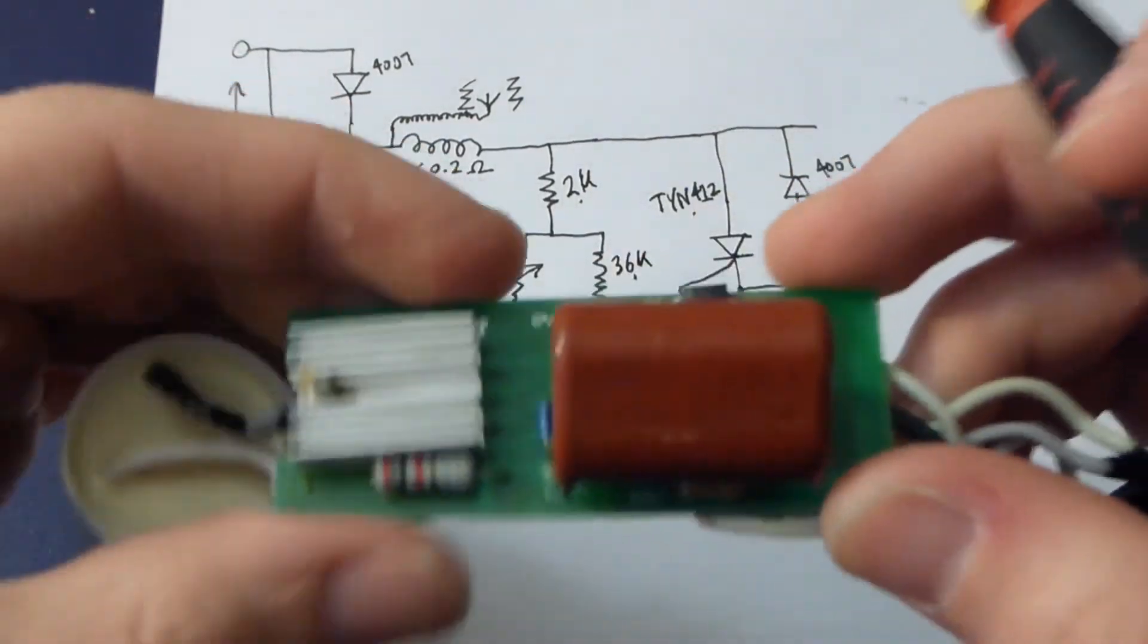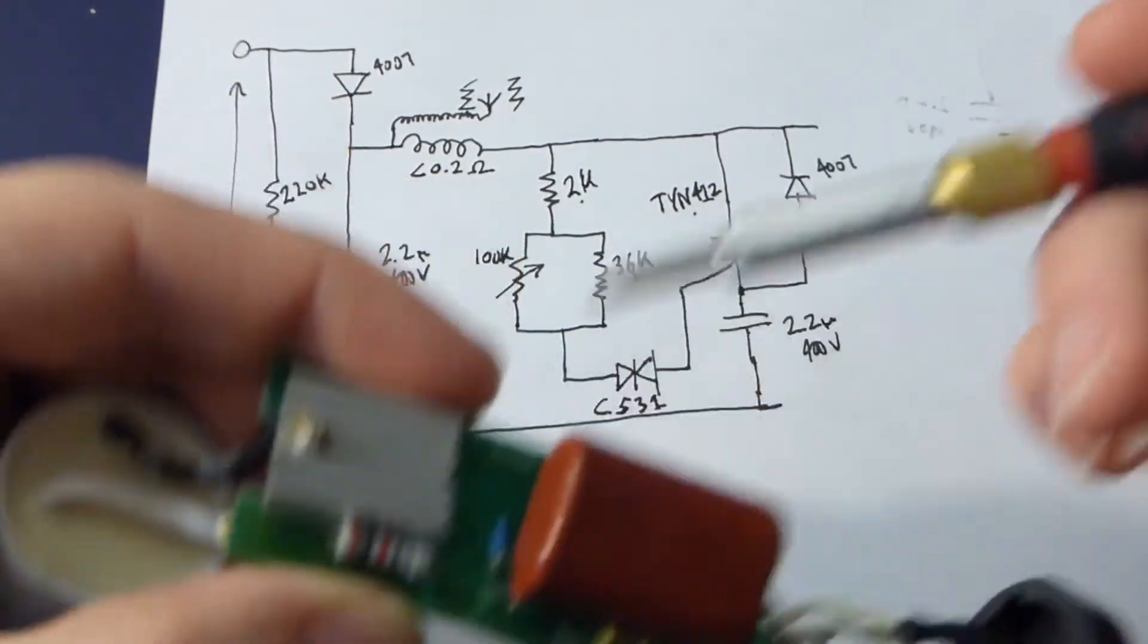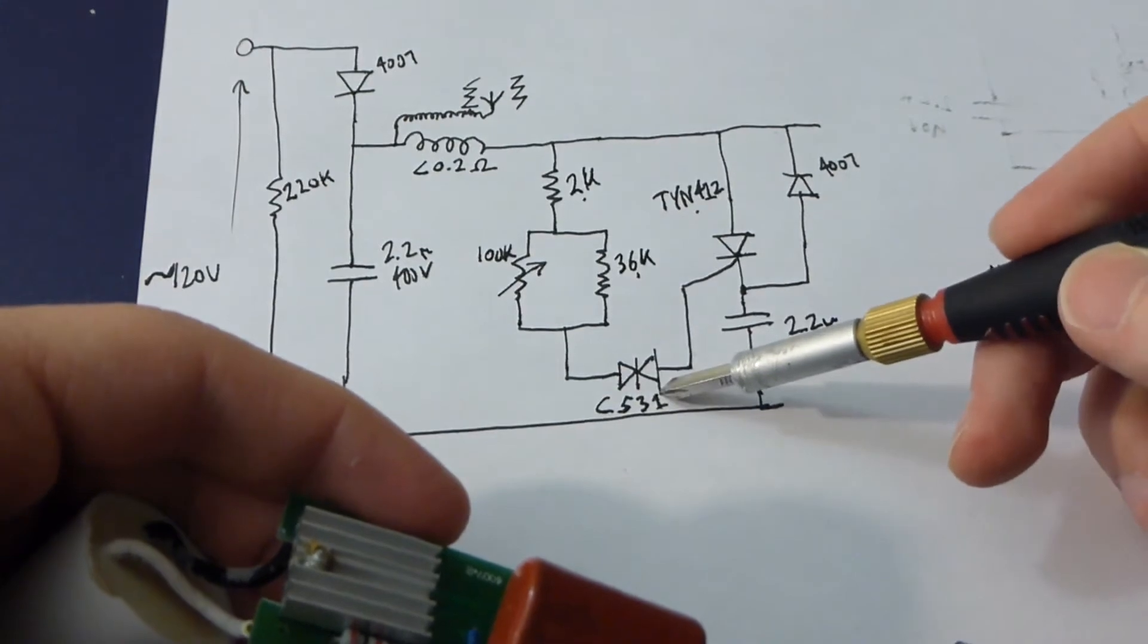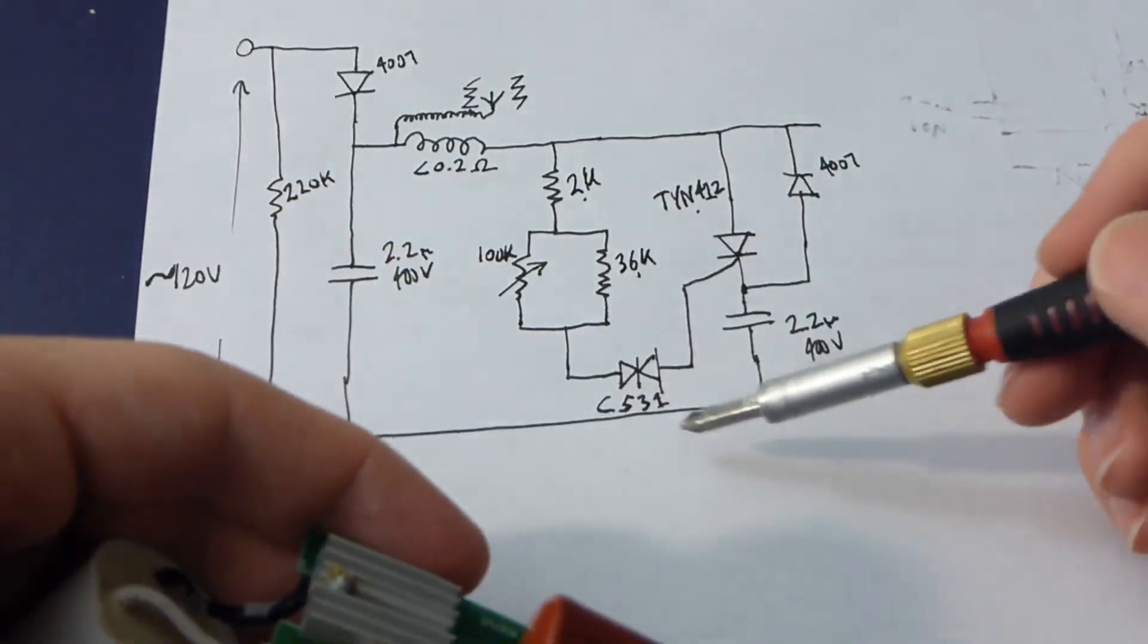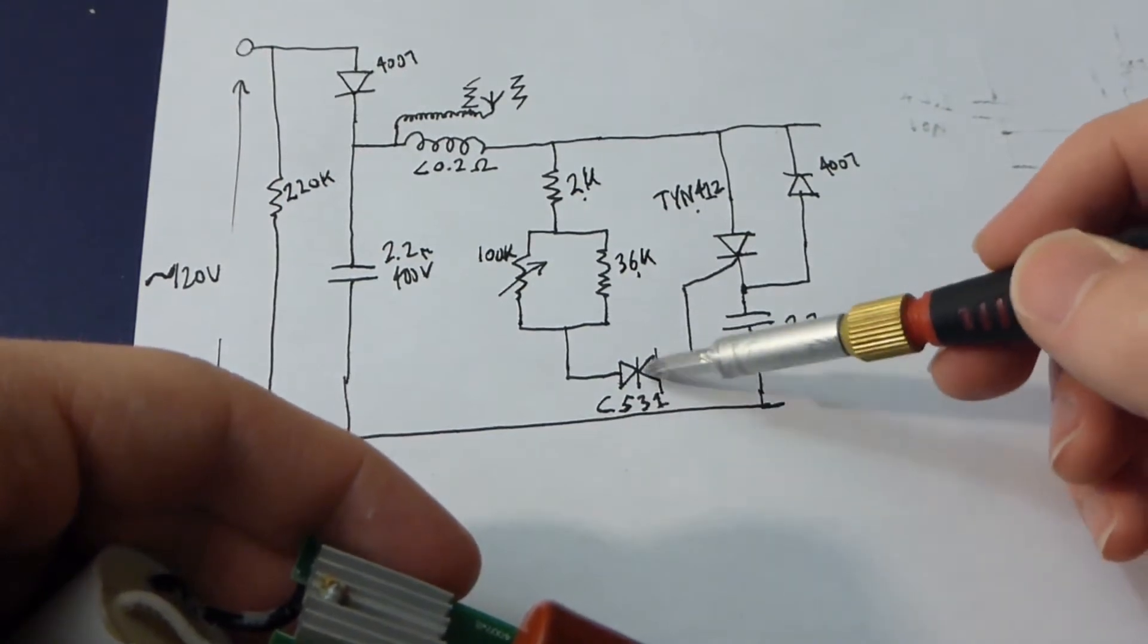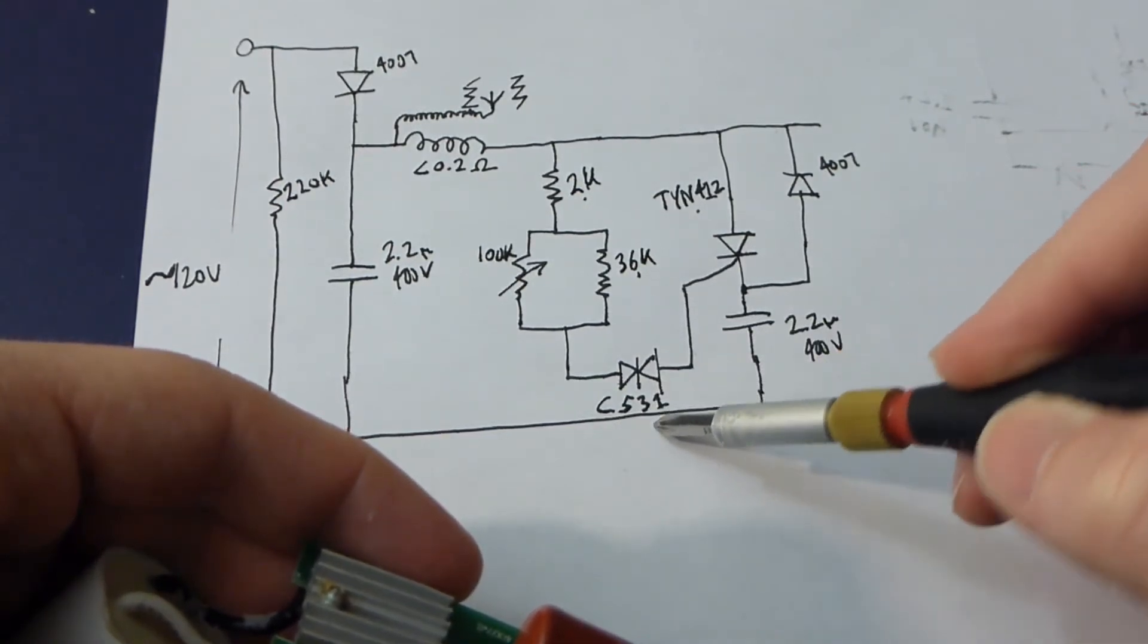And this component value here is right here, I had a mind fart, I can't remember what that thing's called. But that's the component here, and it's a DIAC, I believe, yeah, it's a DIAC. That's a C531.